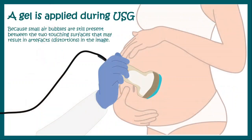A gel is applied during USG because small air bubbles can still be present between the probe surface and the body surface, which can give rise to distortions in the image known as artifacts.